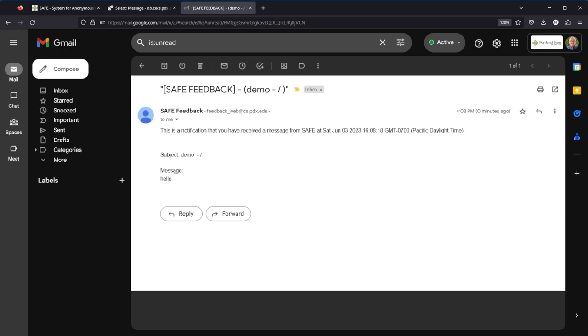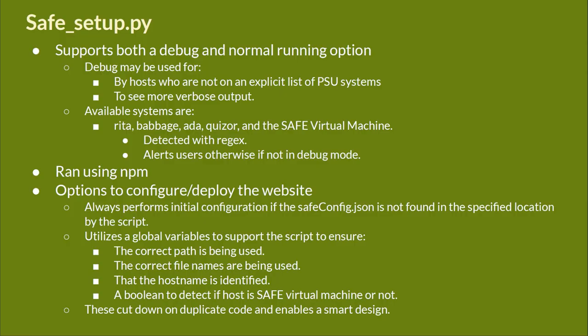Next, I'd like to talk in detail about the SAFE setup script that we use. The Python script, which is called safesetup.py, supports both a debug and normal running option. Debug may be used for hosts who are not on an explicit list of PSU systems, or to see more verbose output, so this can be run both on the PSU system or on a personal machine. The explicit list of available systems on the PSU side are Rita, Babbage, Ada, and Quizzer, and the SAFE virtual machine. The hostname is detected with a regex, and the script alerts the users otherwise if not in debug mode.